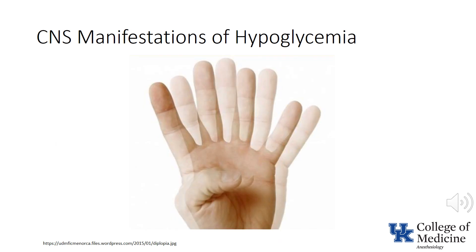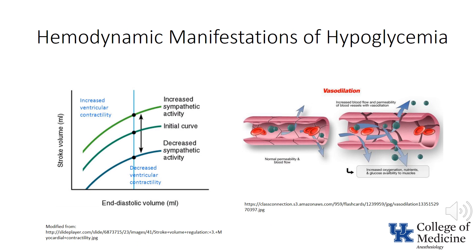CNS manifestations of hypoglycemia include confusion, fatigue, headache, somnolence, dementia, diplopia, visual loss, and convulsions or coma. Cardiovascular manifestations include tachycardia, palpitations, increased myocardial contractility, increased myocardial work, and vasodilation. Increased myocardial contractility may lead to ST-segment depression.